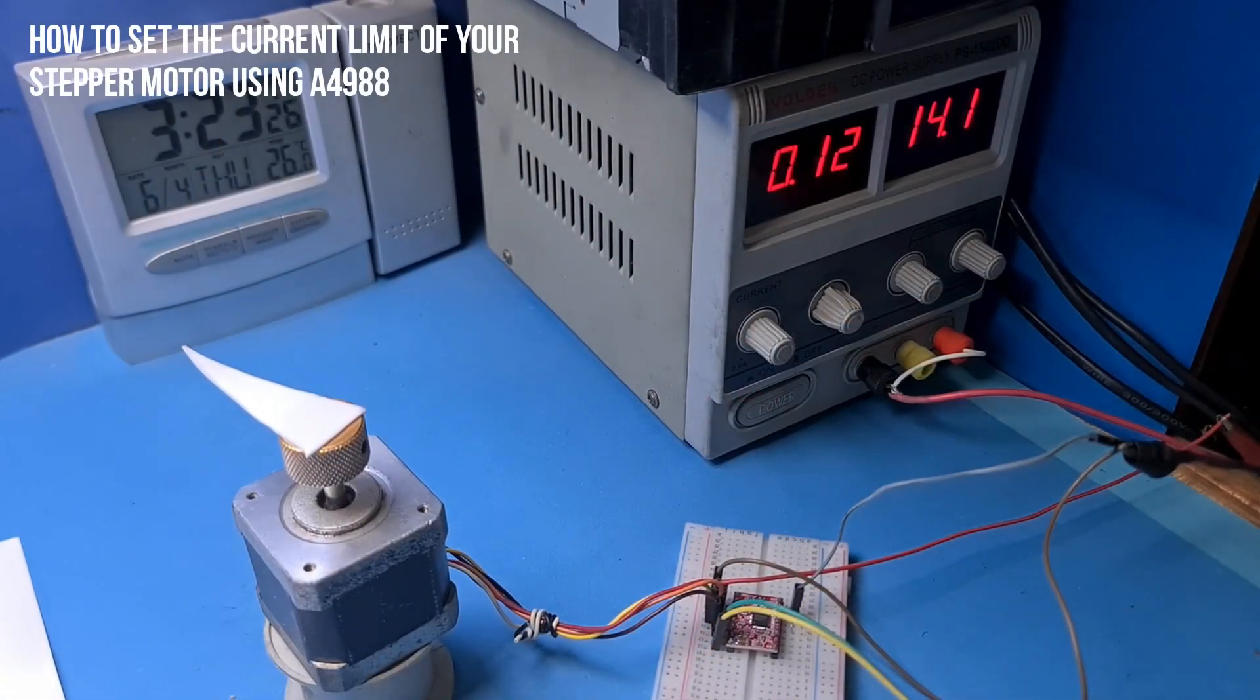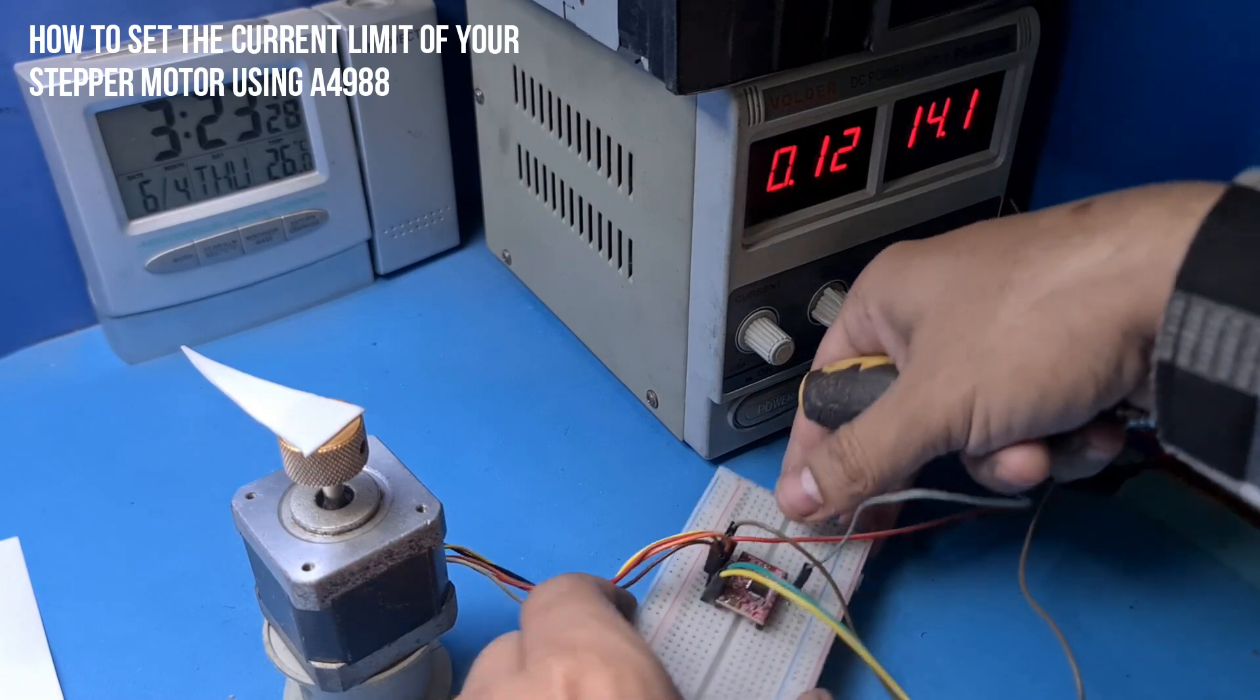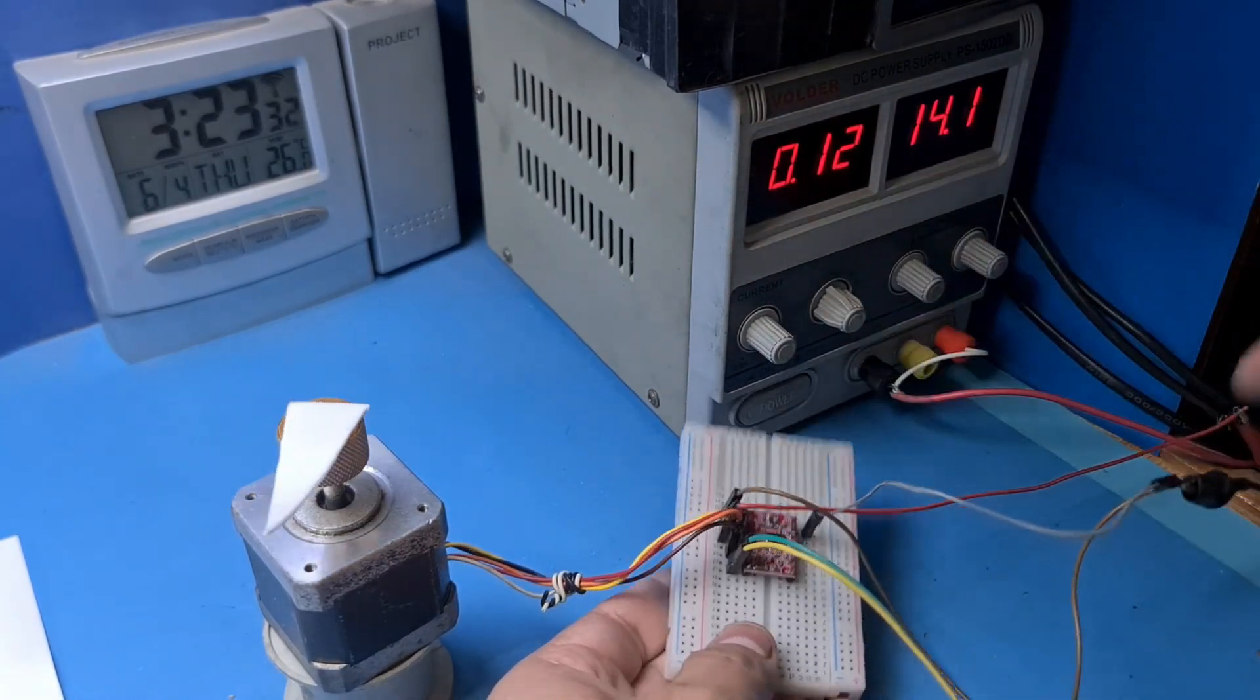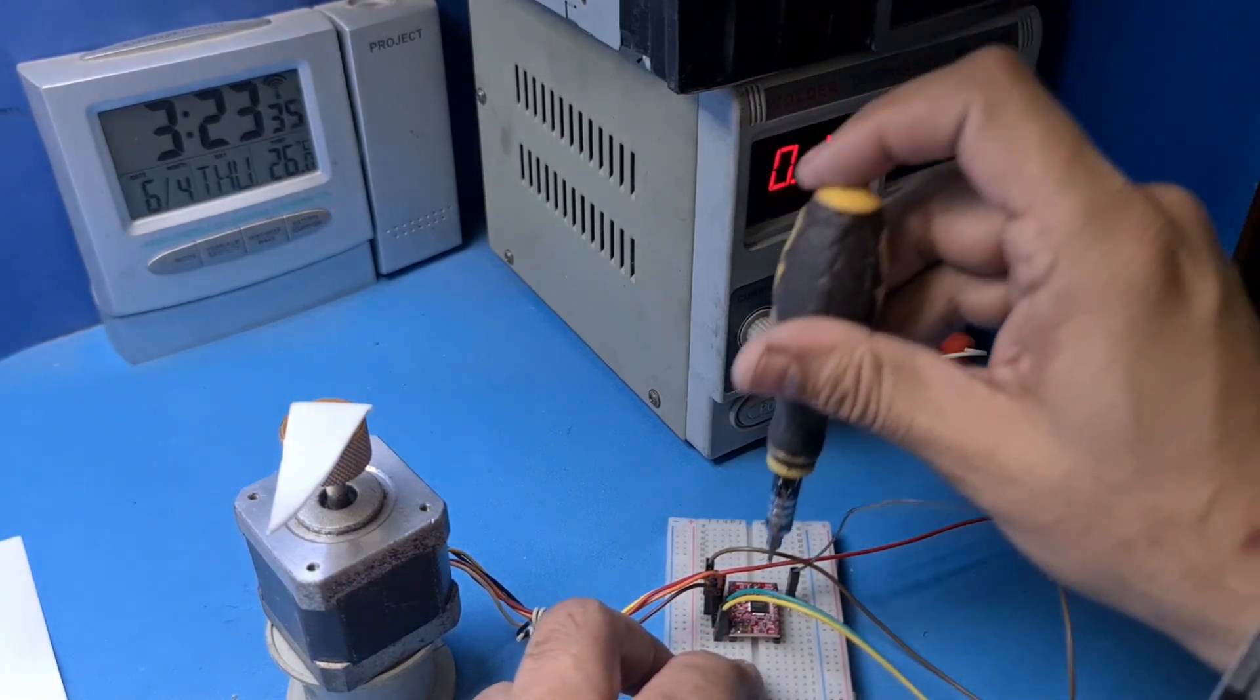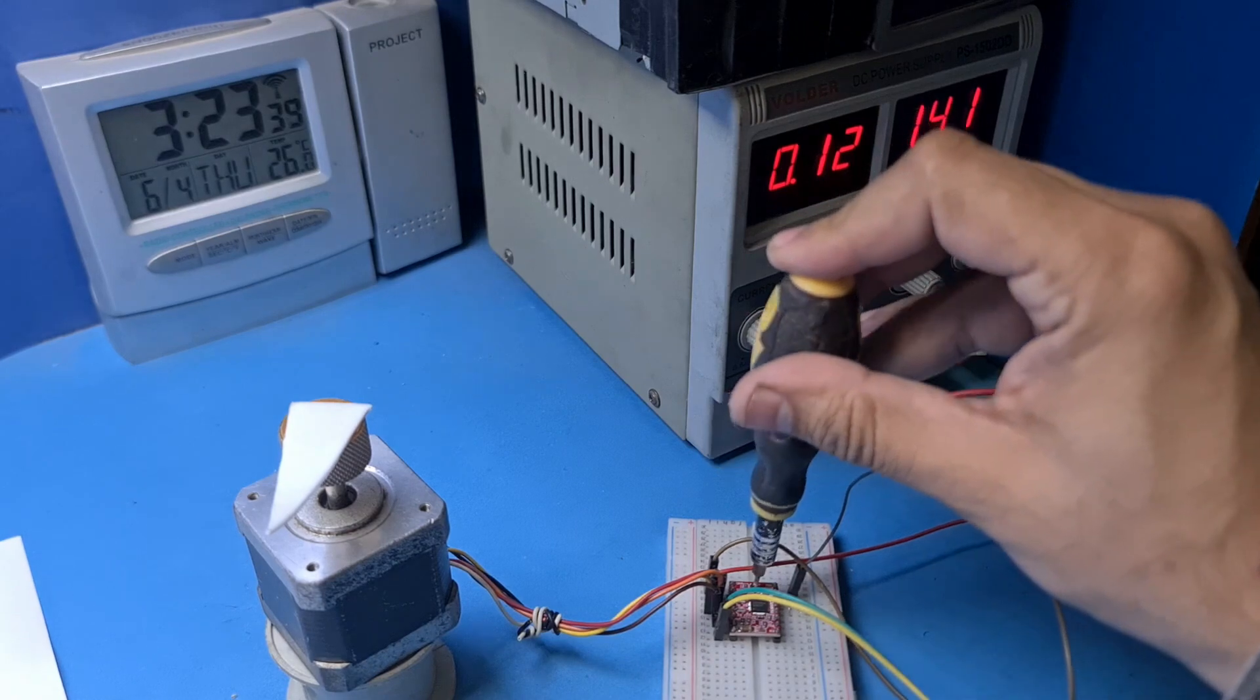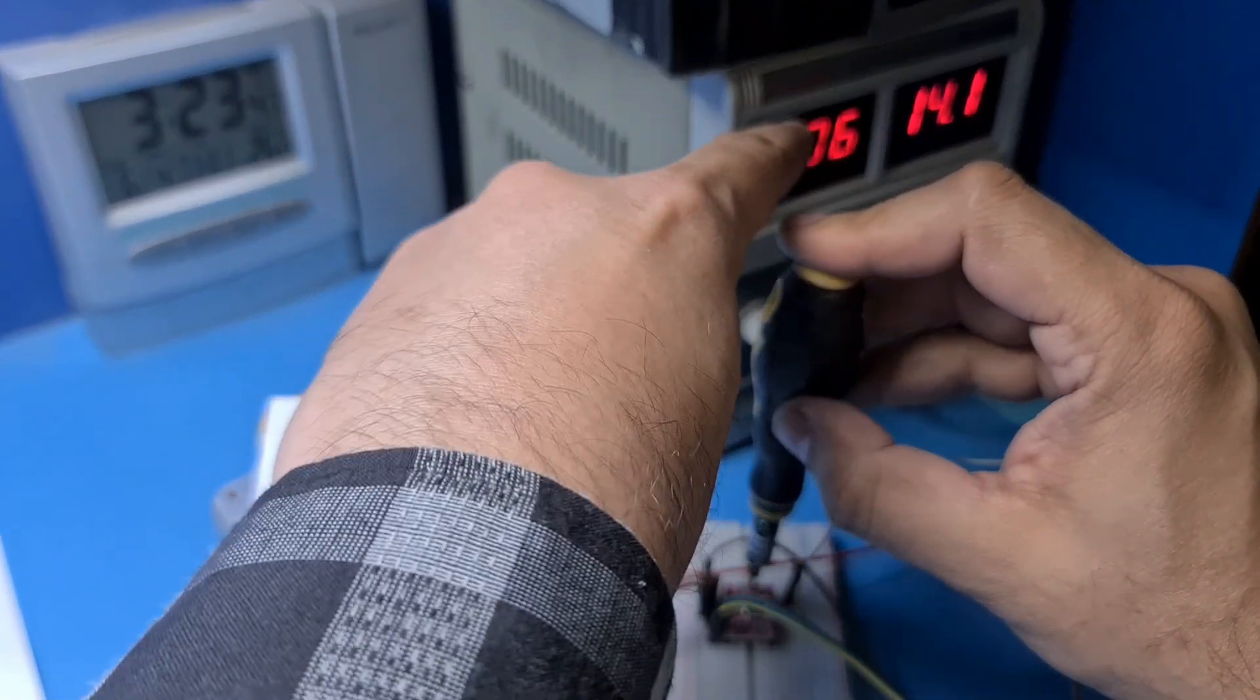It is necessary to set the current limit of the A4988 to make it safe for both the driver and the stepper motor. It is very easy to do so. You just need to connect an ammeter with your power supply, and then you can use the potentiometer on the driver to set the current. Turning it clockwise will increase the current, while turning it anti-clockwise will decrease the current.